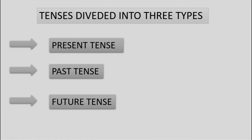Tenses are divided into three types: 1. Present tense. 2. Past tense. 3. Future tense.